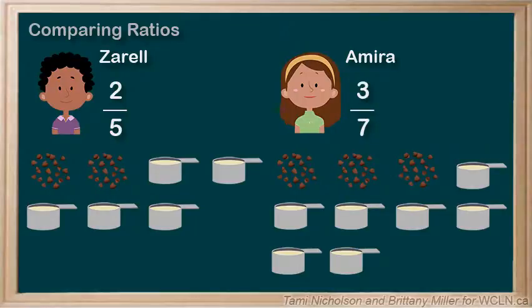Next, change each fraction to an equivalent fraction using the lowest common denominator. To do this we need to find the lowest number that both 5 and 7 will go into. This number is 35.